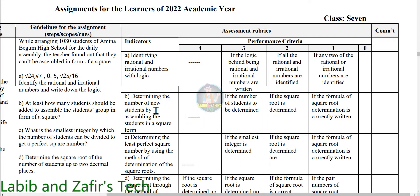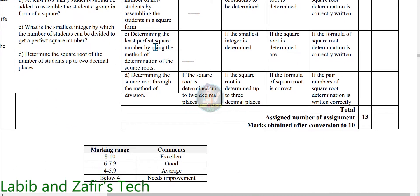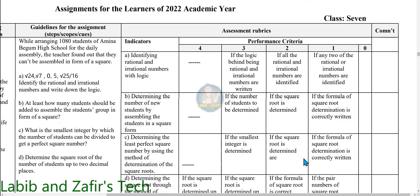For question B — determining the number of new students by assembling the students in a square form — this is a three marks question. For three marks, if the number of students to be added is determined. For two marks, if the square root is only determined. For one mark, if the formula of square root determination is correctly written. For question C — determining the least perfect square number by using the method of square root — this is also a three marks question. For three marks, if the smallest number is determined. For two marks, if the square root is determined. For one mark, if the formula of square root determination is correctly written.